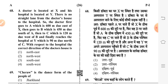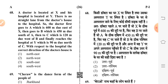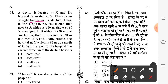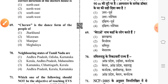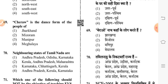Question 68: a doctor is located at X and his hospital at Y. The doctor goes east 600 meters to A, then south 450 meters to B, then west 120 meters to C, then north 90 meters to reach hospital Y. With respect to the hospital, the correct direction of the doctor's house is — second option: north-west.